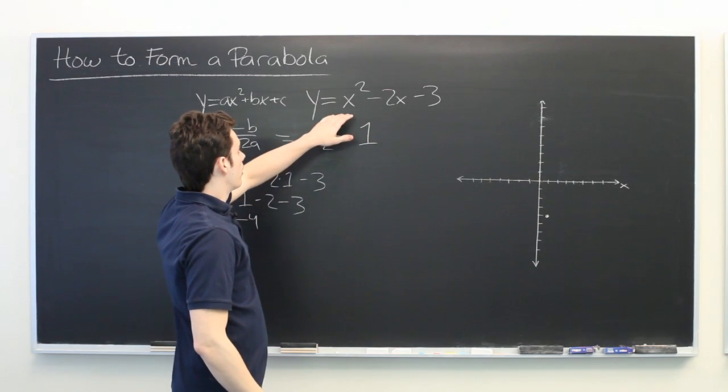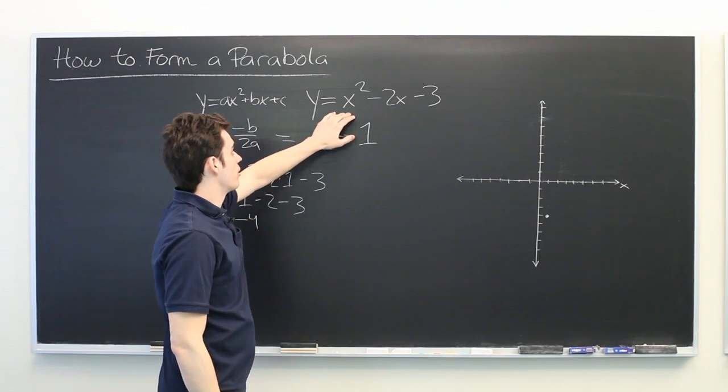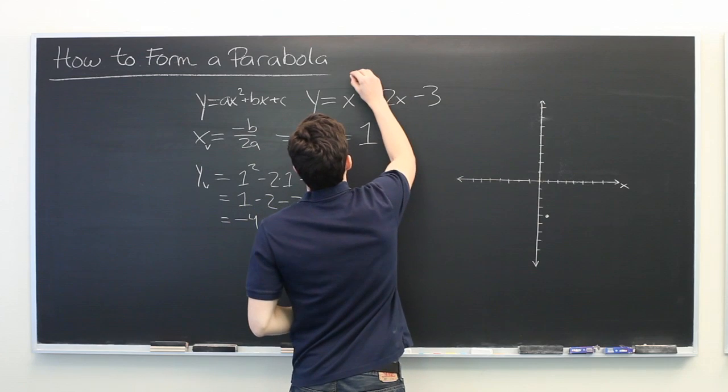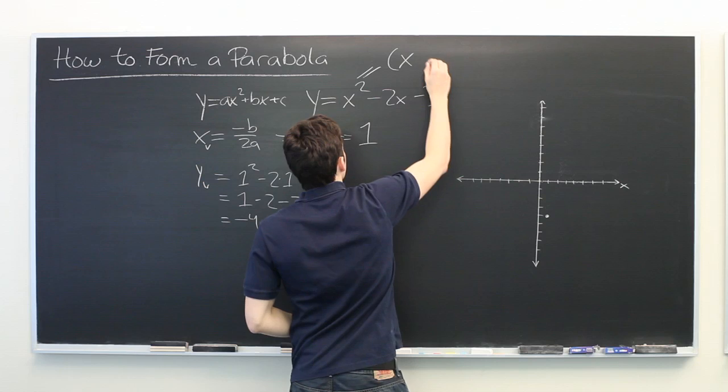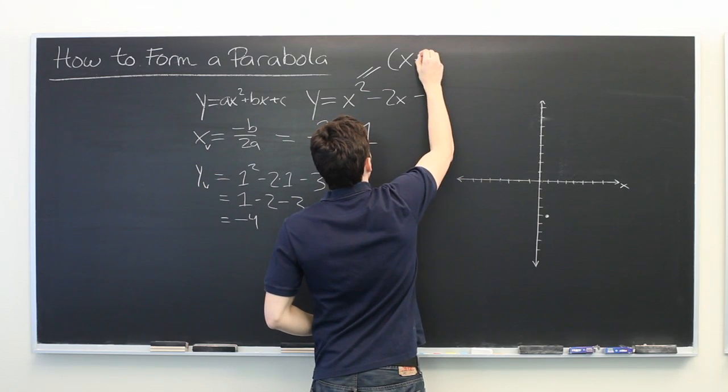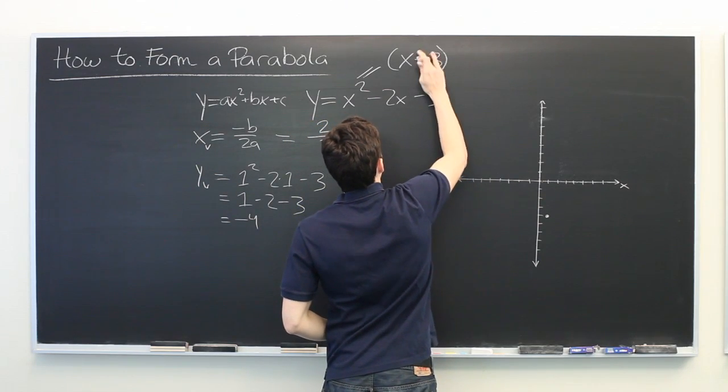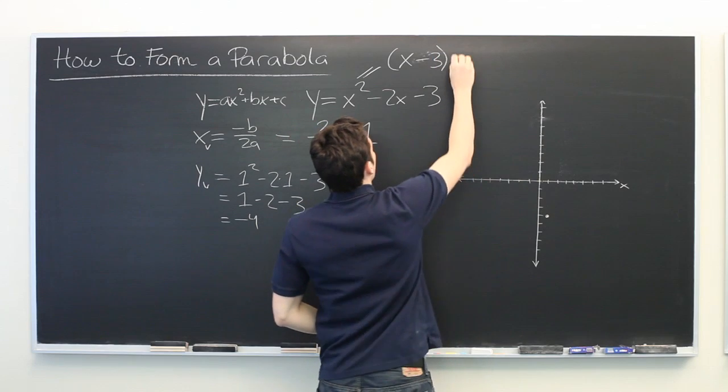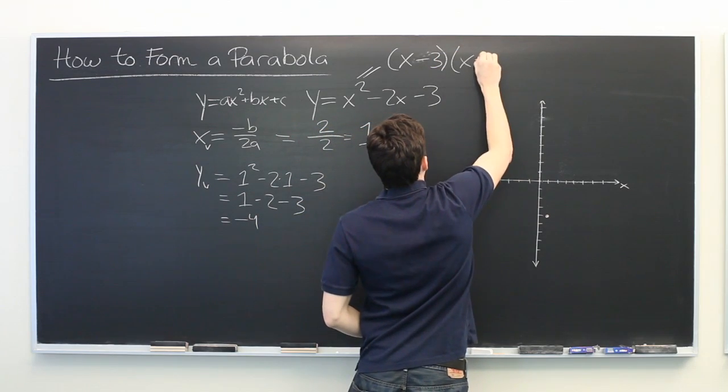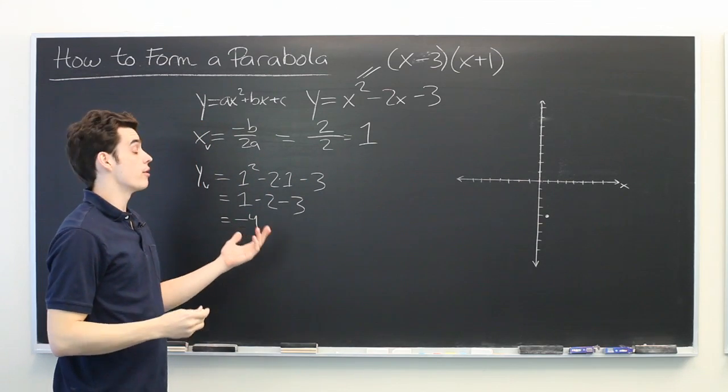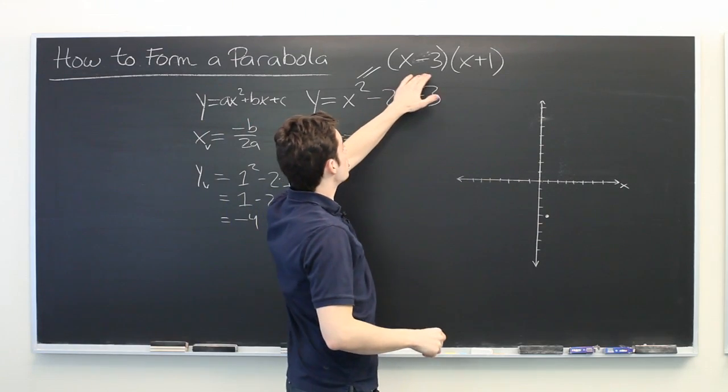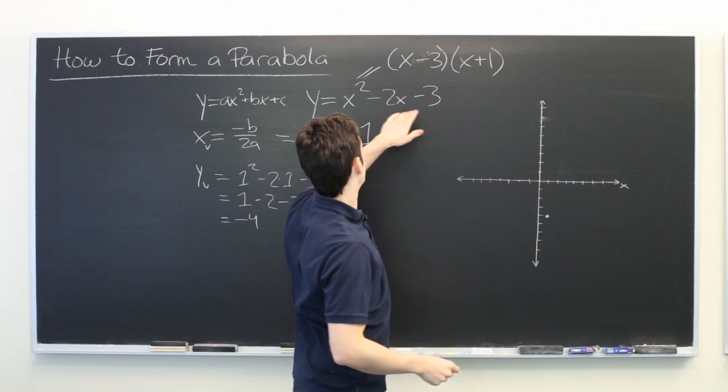Luckily, this equation can be factored. In fact, you can rewrite it as x minus 3 times x plus 1. If you're ever uncertain about your factorization, you can simply multiply these by each other and you should get the original equation.